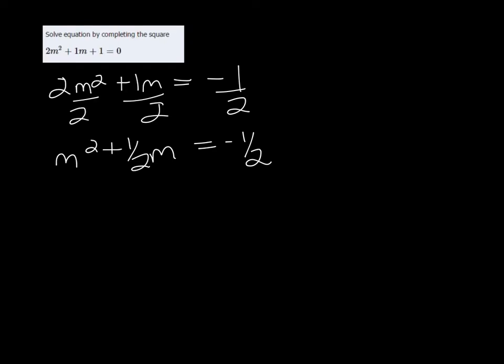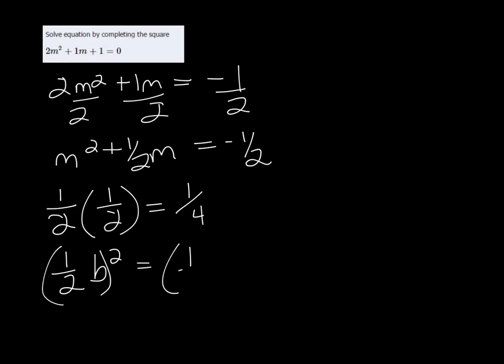On the left side, we want half of B. B is ½, so ½ of ½ is ¼. And half of B squared is equal to (¼)², which is 1/16.